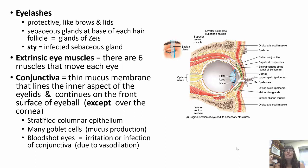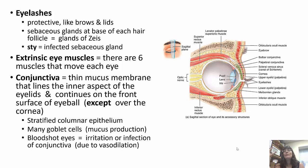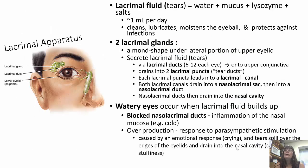The conjunctiva has stratified columnar epithelium with a lot of goblet cells involved in mucus production. If you get vasodilation in this area, you'll have bloodshot eyes — irritation or infection will also cause that. Lacrimal fluid, or tears, is made up of water, mucus, lysozymes, and salt. About one milliliter is produced per day, helping keep our eyeballs moistened, and it also cleans and protects against infections.